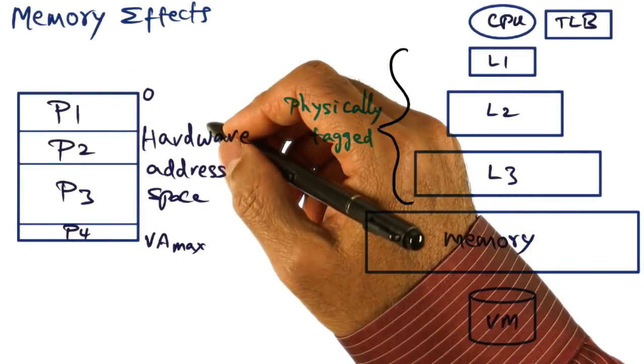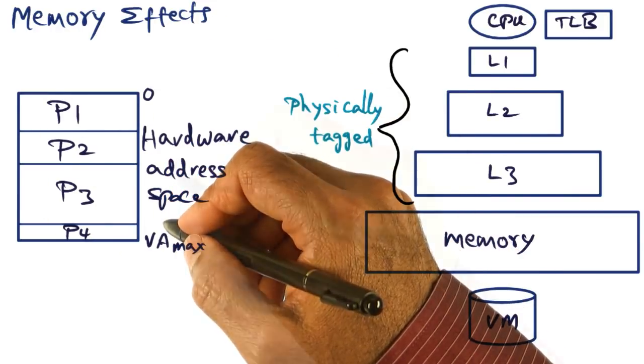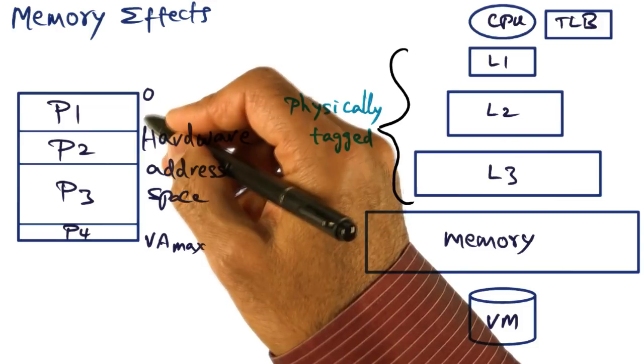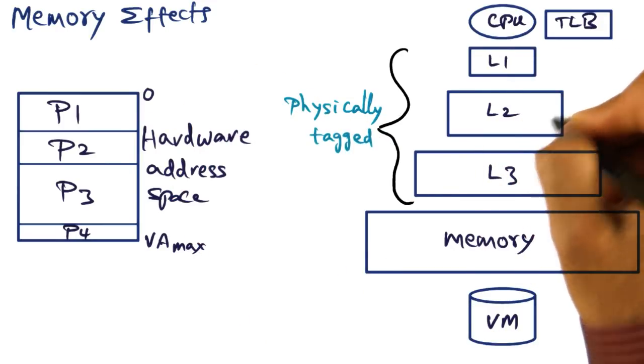Now what do we mean by memory effects? What we mean by that is, if you have this hardware address space, this of course is much bigger than the amount of space that's available in these caches.